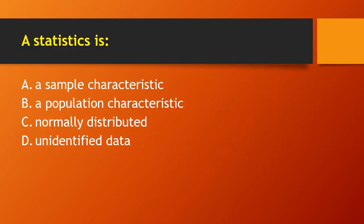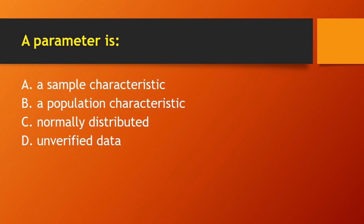A statistic is: (a) a sample characteristic, (b) a population characteristic, (c) normally distributed, (d) unidentified data. The right answer is: a statistic is a sample characteristic.